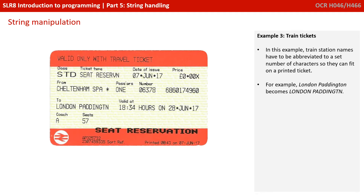Consider the situation of a train ticket. In this example, train station names have to be abbreviated to a set number of characters so they can fit on a printed ticket. With long train station names, for example London Paddington, the string would need to be manipulated so we end up with 'London PADDINGTN', and again this would be an example of string manipulation.